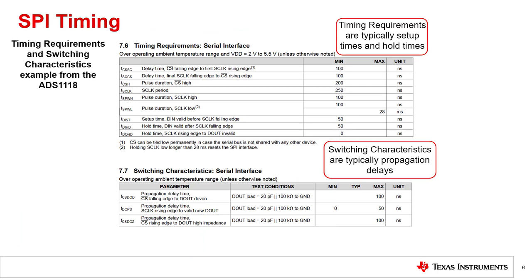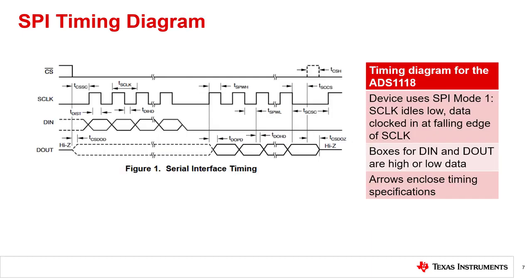Here we take an in-depth look at SPI timing from an example data sheet. Using the ADS1118 precision ADC, two tables show the timing requirements and the switching characteristics. Typically, timing requirements show setup and hold times for the SPI communications, and the switching characteristics show propagation delays. These tables give minimum and maximum times for different characteristics shown in a timing diagram.